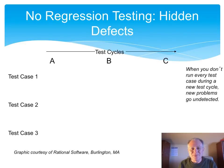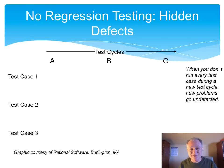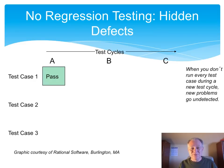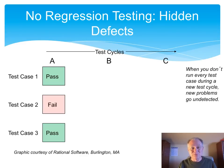As an example, I want to run through a couple of scenarios to show the contrast of not doing regression testing versus doing regression testing. Let's say that we have these three test cases, and we're going to do three cycles of testing, but we're not going to do any regression testing. In our three test cases, the first one passes, the second one fails, and the third one passes.